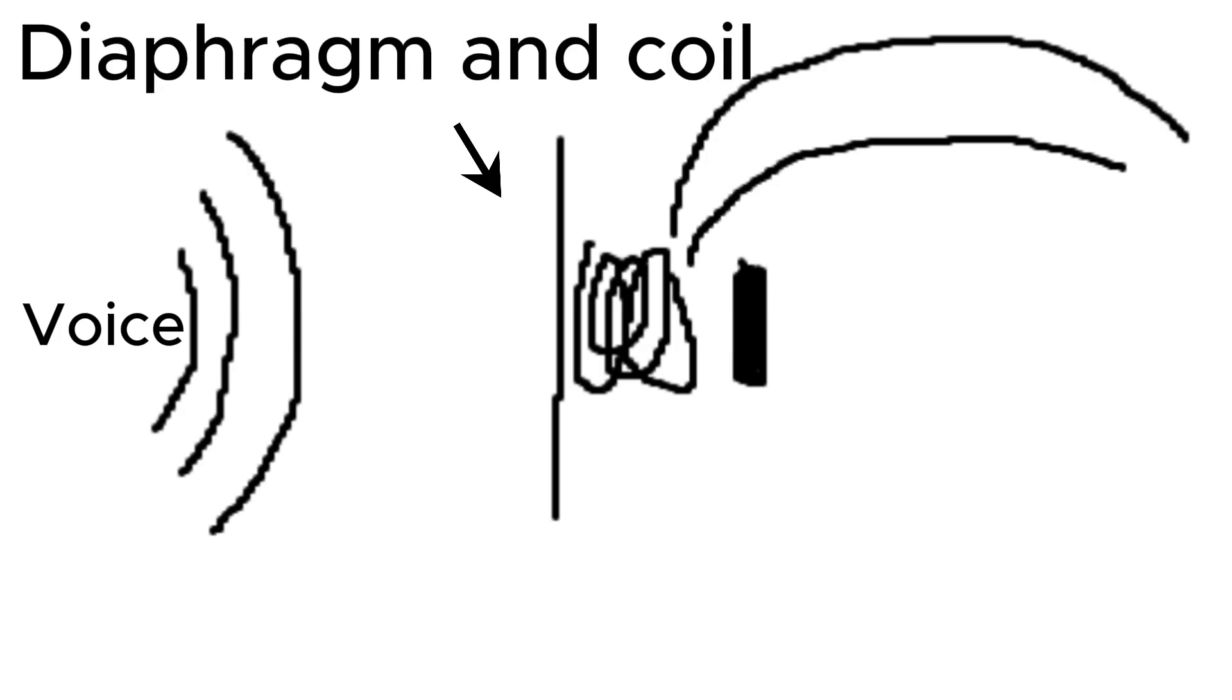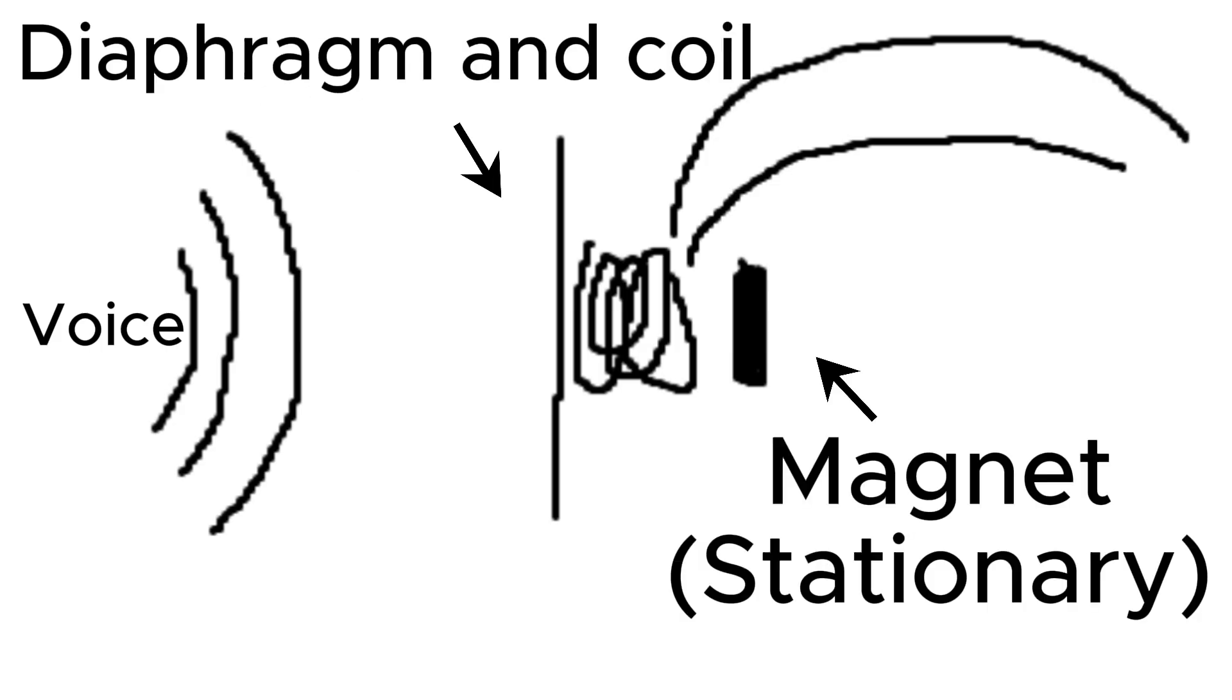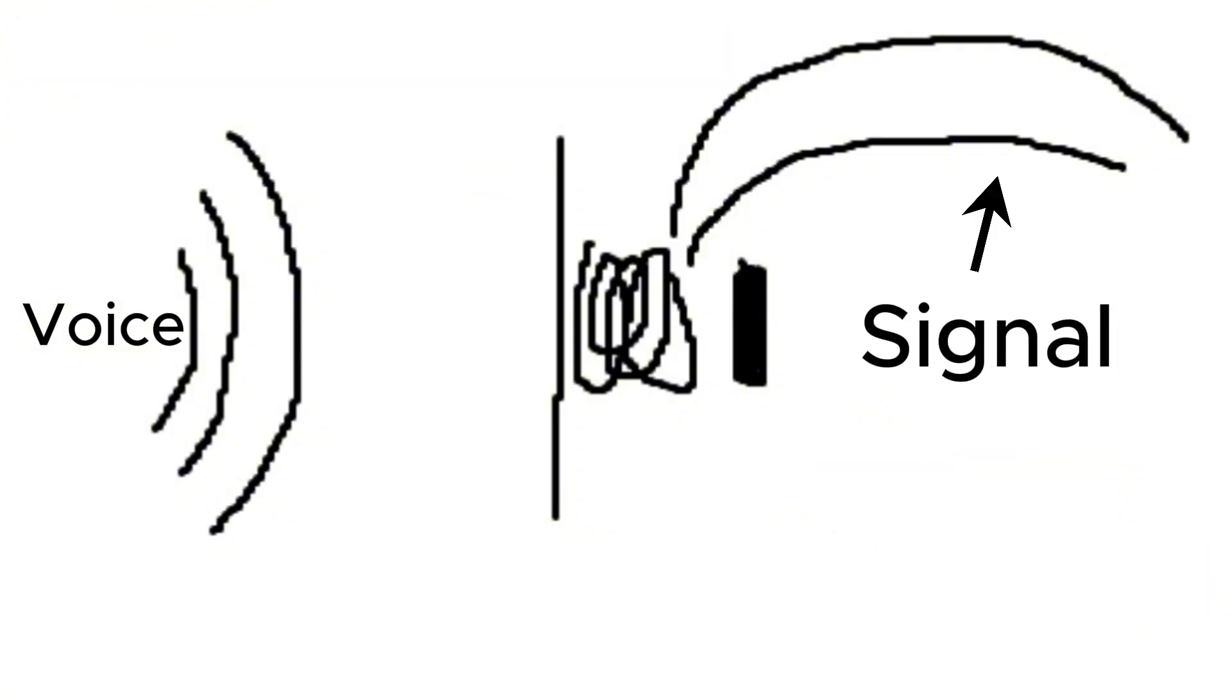The idea is my voice creates sound waves. Then those sound waves shake a diaphragm with the coil attached to it. The coil has a magnet in the center, which is stationary. This change in magnetic field induces a current in the wire, and that is sent as a signal to the computer and recorded.